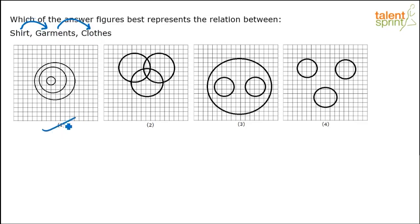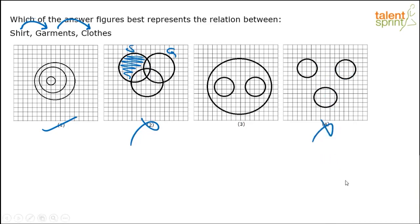Option one has to be the answer undoubtedly. Option two implies some shirts are not garments — but all shirts are garments, so that's wrong. Option three forces shirts, garments, and clothes to have no relationship at all, which is incorrect. Option four shows shirts and garments as disjoint inside clothes, or similar invalid configurations. All those are not valid. So option one is the answer.